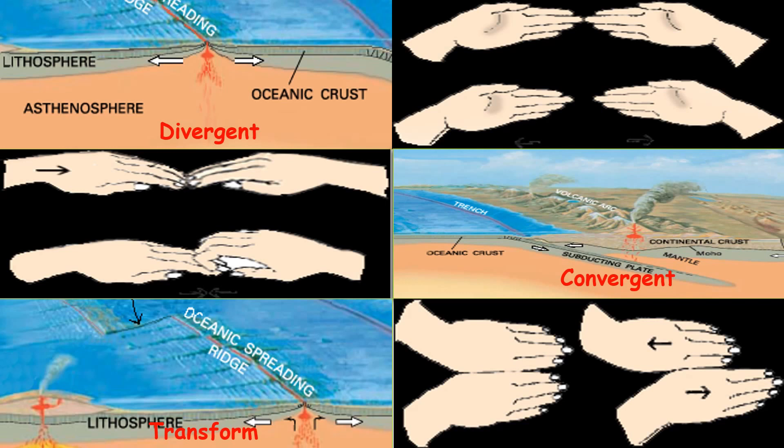For the Divergent boundary, you can use this diagram — the two hands are moving away from each other. The second one shows hands moving towards each other for Convergent, and for Transform, the hands are sliding past each other.